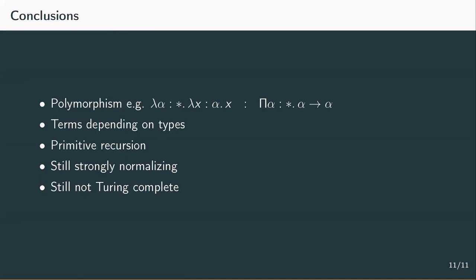To wrap things up, one example of a function that is not primitive recursive is the Ackermann function. But this lack of general recursion isn't actually a big disadvantage, since almost every program you can think of is primitive recursive. So lambda 2 is more than sufficient to construct most commonly used functions. In the two type systems we've looked at so far, we've always worked on constructing more complex terms — terms depending on input terms, and with polymorphism, terms depending on some input type. In the next video, we're going to look at two systems, lambda weak omega and lambda P, which will add more complexity to the construction of types. Thank you very much for watching, and I'll see you in the next video.